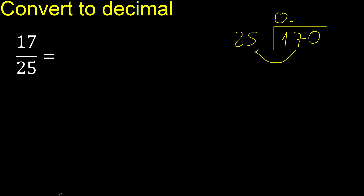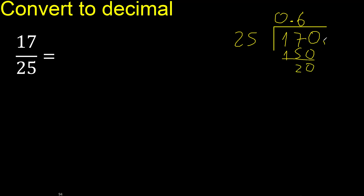170 is not less than 25. Multiply 25 by which number is nearest to 170 but not greater? 25 multiplied by 7 is 175 — that is greater. Multiplied by 6 is 150. Subtract: remainder is 20. There is no number that goes down, therefore complete — always complete with 0.